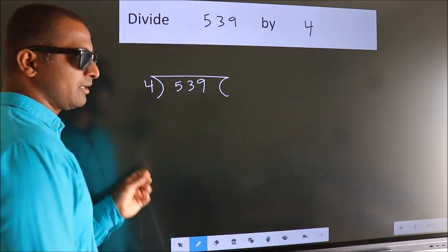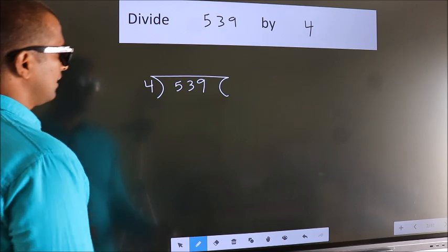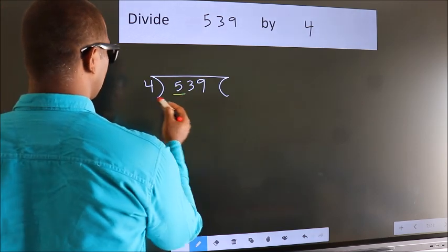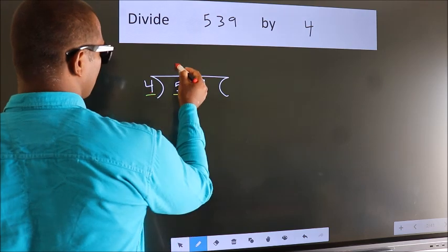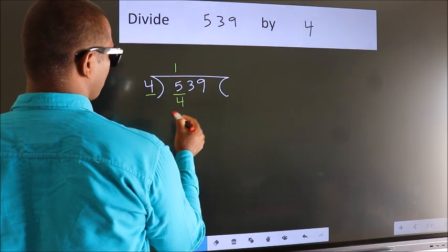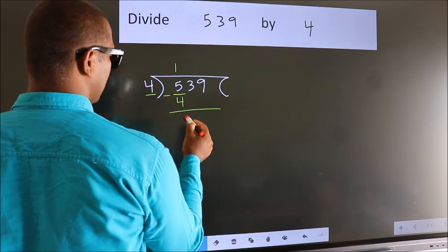This is step 1. Next, here we have 5, here 4. A number close to 5 in the 4 times table is 4 ones, which is 4. Now we subtract and get 1.